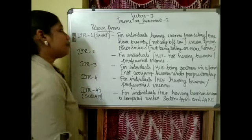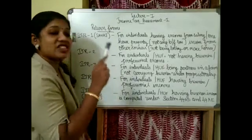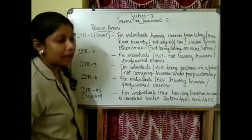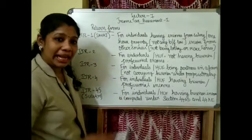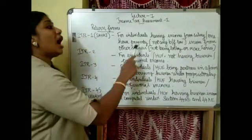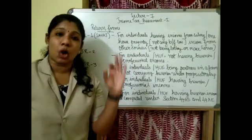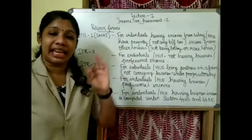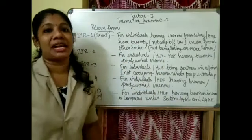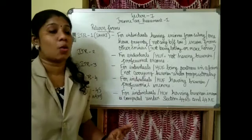ITR1 is applicable for individuals having income from salary, one house property, and income from other sources. These are the three income heads covered under ITR1: income from salary, income from house property, and income from other sources.